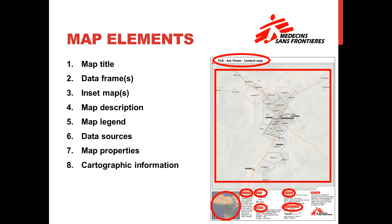8. Cartographic information. The map scale, the map projection, the datum — things we will explore in part C, and things communicated by the map on the right's cartographic information section.